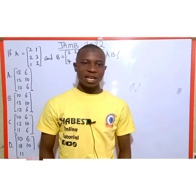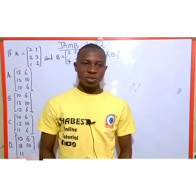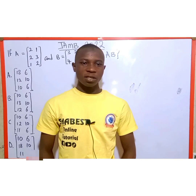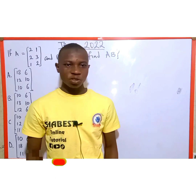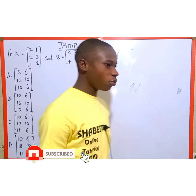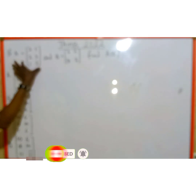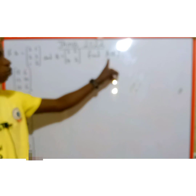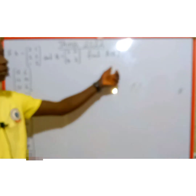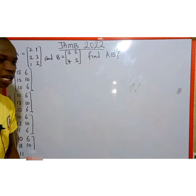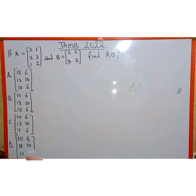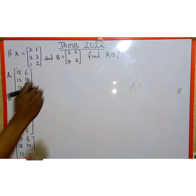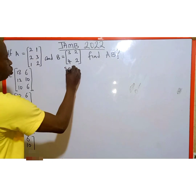Welcome once again to Shabbat's online tutorial. In today's tutorial, we are going to learn how to provide a solution to this JAM 2022 past question. The question involves matrix A and matrix B, and we are asked to find the value of AB — that is, A multiplied by B. Here are the available options. So this is a matrix multiplication problem and we are going to solve it.